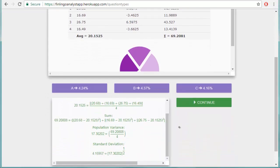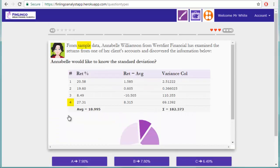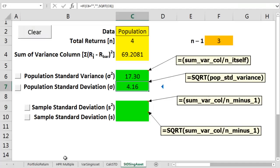Now we can do a sample question. Here, the number of returns is also 4, and the sum of the variance column is 182.373. Let's get this over to the spreadsheet. Obviously, in the exam, you do all this work on a calculator.